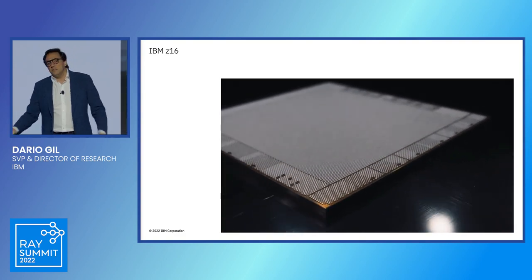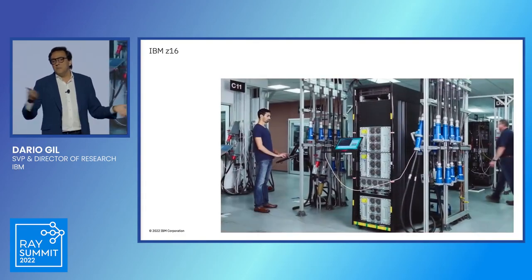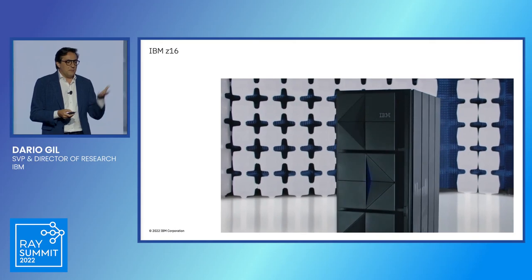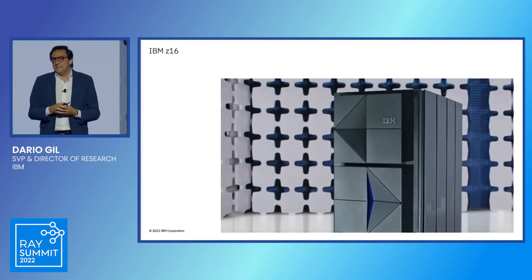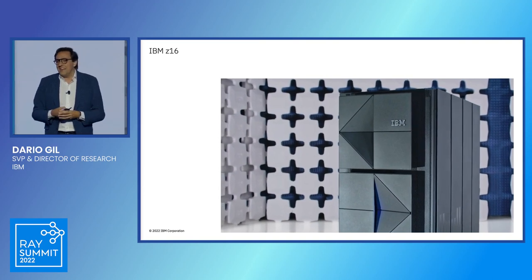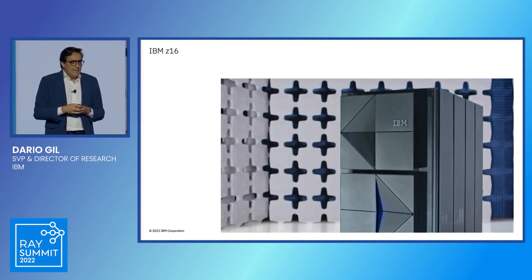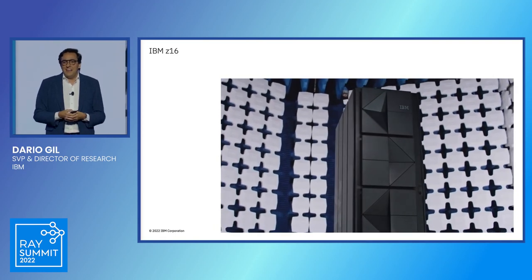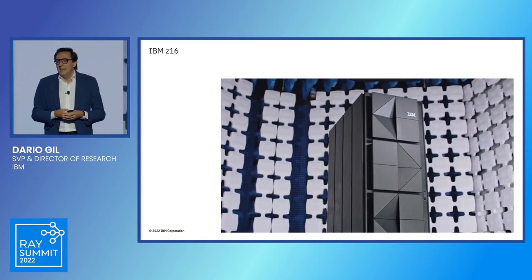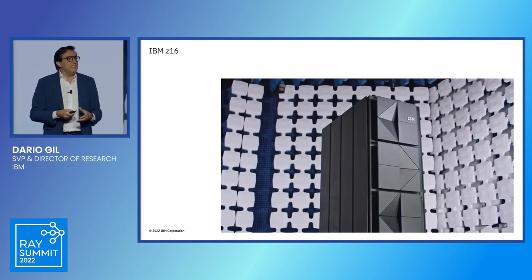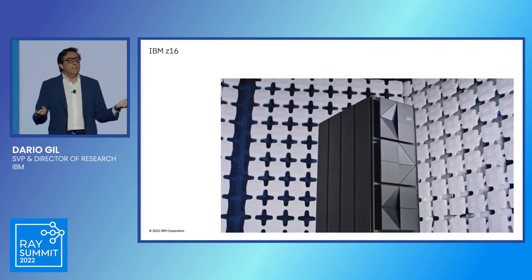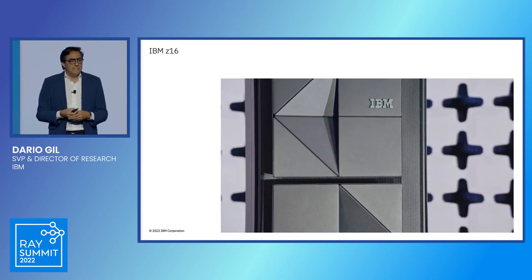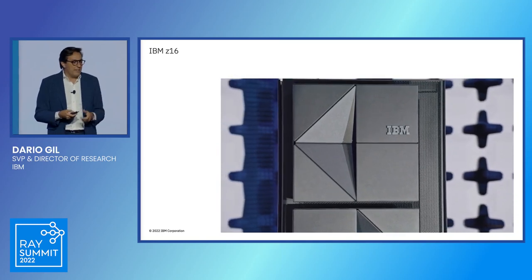As a byproduct of that theoretical and foundational edifice combined with Moore's law, we have built some of the most sophisticated machines that humans have ever created. I give the example of our recently launched Z16 system: 70% of the world's transactions run on Z systems around the world. This is a marvel of technology — you can have downtimes of a couple of seconds a year. A single machine can process over a trillion transactions a day. We put an AI inference engine in the microprocessor, so we can run 300 billion AI models a day in these kinds of systems.